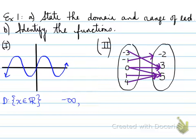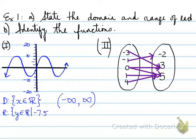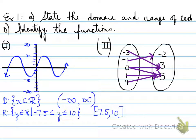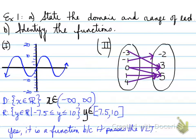So x belongs to the reals. In interval notation it goes from negative infinity to positive infinity. The range, looking at the scale of this particular function, is y belongs to the reals such that it goes from negative 7.5 to positive 10, including those values — in interval notation, negative 7.5 to 10. It is a function because it passes the vertical line test; dragging the vertical line anywhere across the graph, it touches the graph only once.